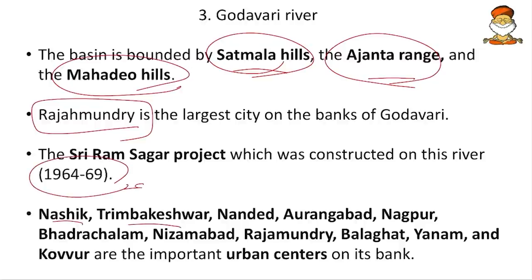Important cities on the Godavari river include Nasik, Trimbakeshwar, Nanded, Aurangabad, Nagpur, Bhadrachalam, Nizamabad, Rajamahendri, Balaghat, Yanam, and Kaur. These have their own significance — Nasik and Trimbakeshwar are important for Jyotirlinga shrines. Nizamabad and Balaghat are important resourceful industrial towns. Have a glance and locate them on maps.